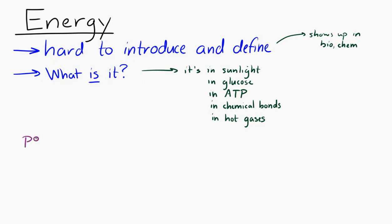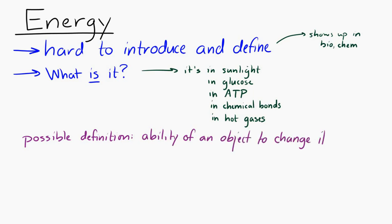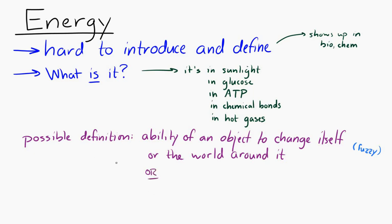One definition would be that it's the ability of an object to change itself or the world around it, which is a little fuzzy, honestly. That doesn't really tell us what it is. Another definition is that it's the ability to do work. That's fewer words, which is nice, but then you've got to ask: what's work? We don't know what work is.